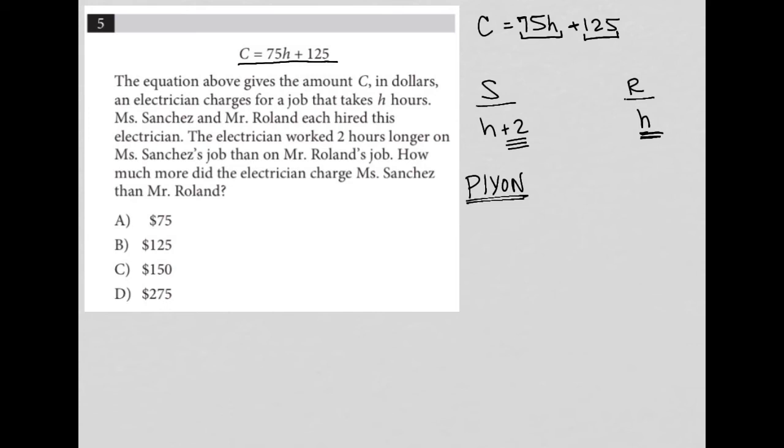It's not required here, but it just makes things much more easy. So I'm going to plug in my own number. H is two. That means that the electrician worked two hours for Mr. Rowland and four hours for Ms. Sanchez.